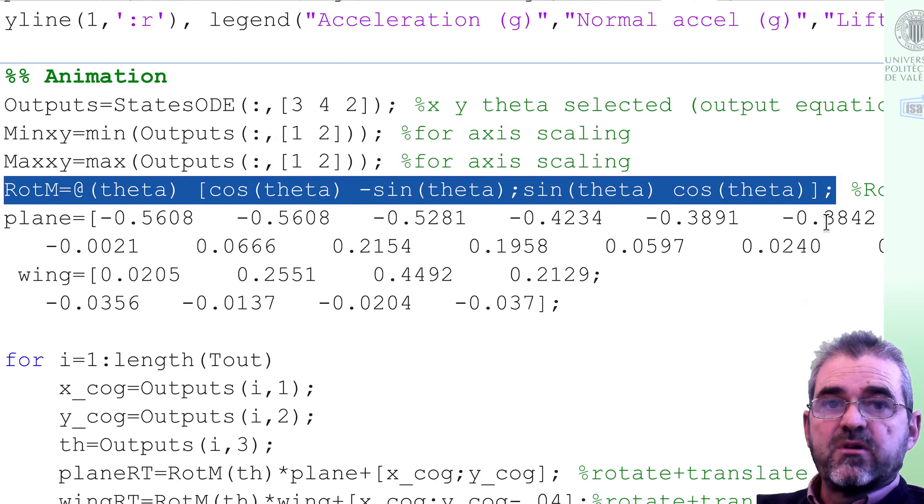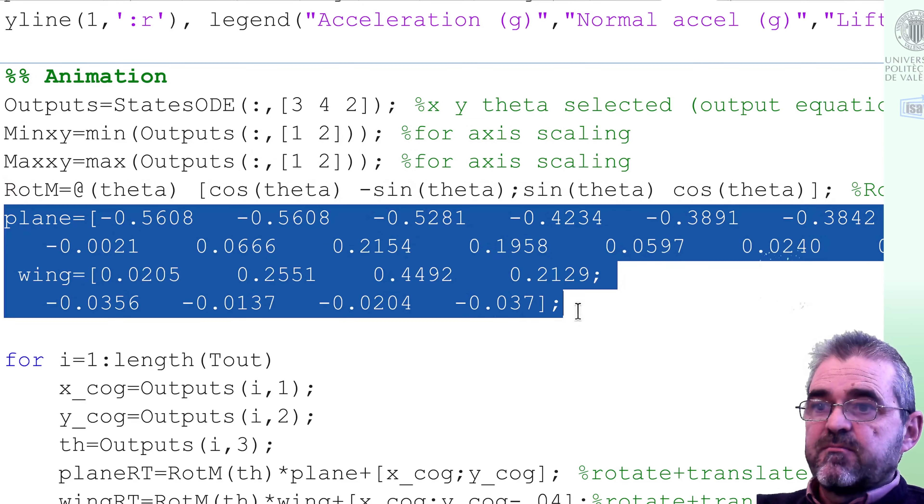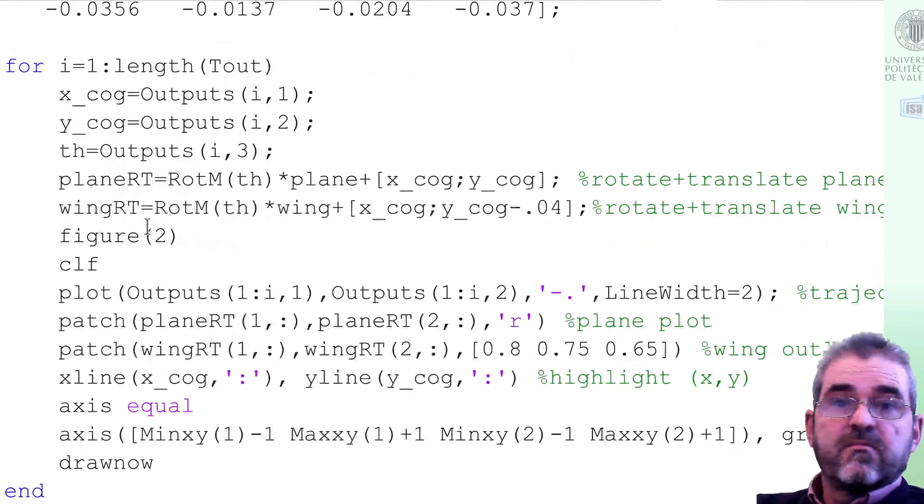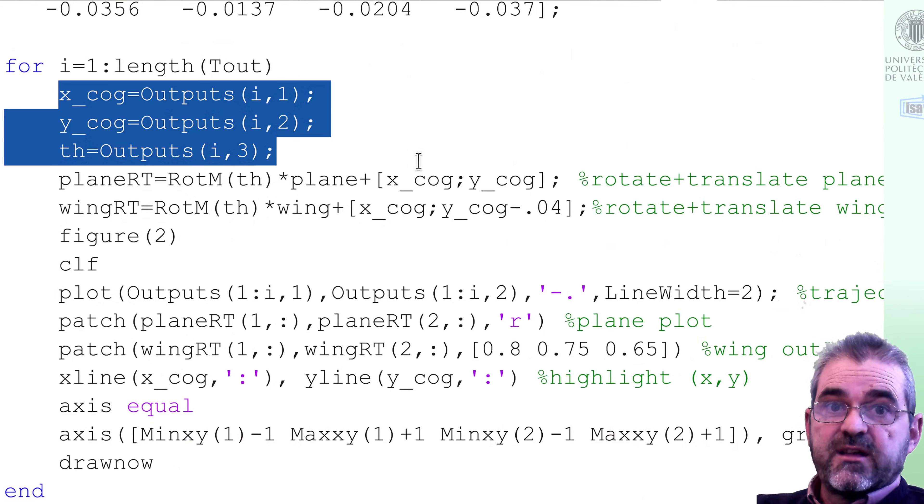This thing will be a rotation matrix, so that it rotates a point theta radians. And then, this plane and wing arrays define the outline of the picture of a plane and the picture of a wing that we are plotting here. So, this for loop is the main animation loop. First, we get x, y, and theta for each frame.